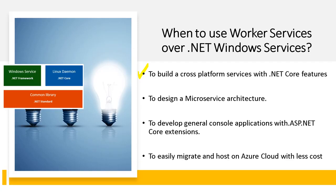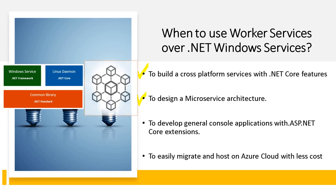Next, Worker Services is particularly applicable when designing a microservice architecture. A web app can be refactored into distinct, separately deployable, and scalable services. For example, you can offload tasks like processing messages from a queue, streaming, or reacting to a file or data change.